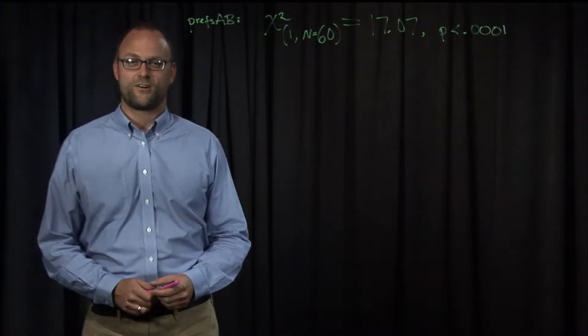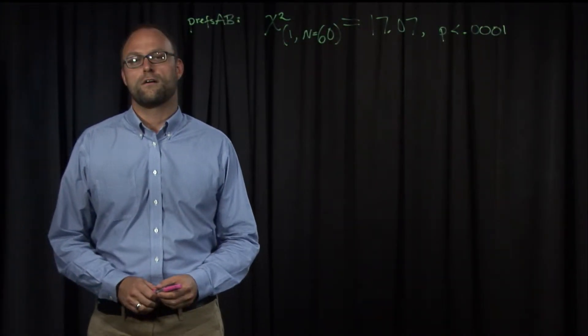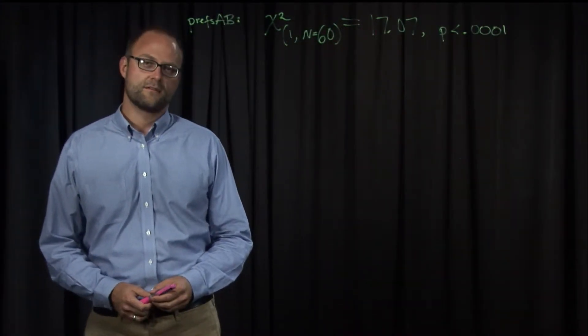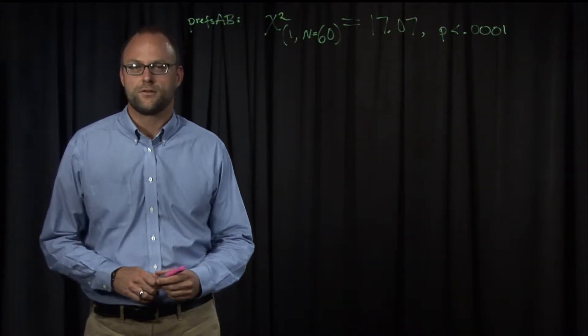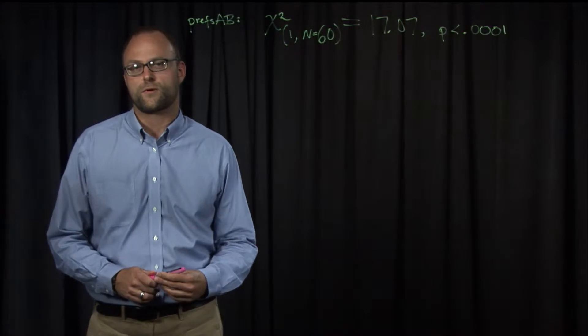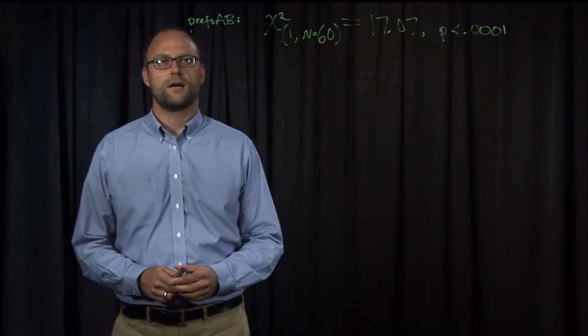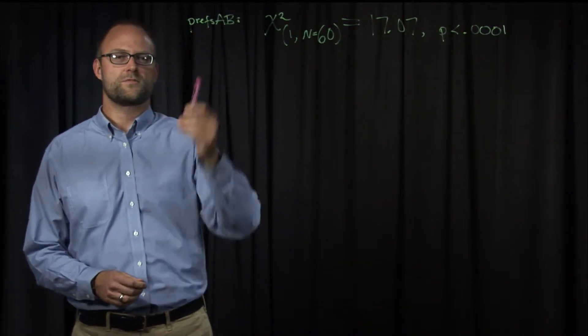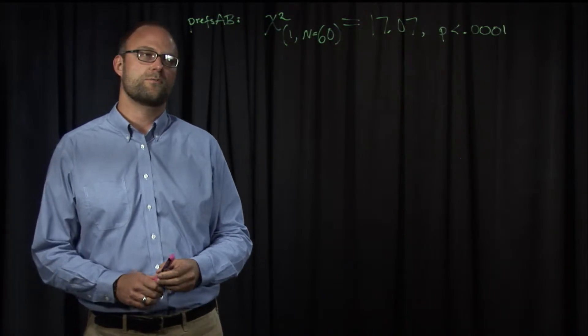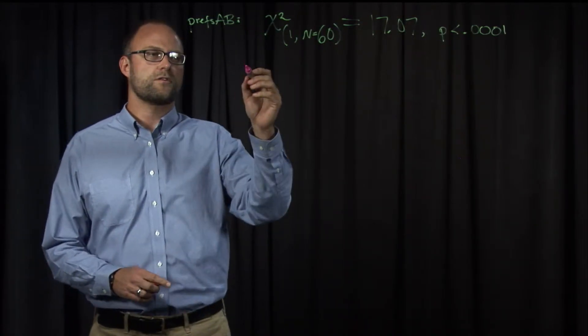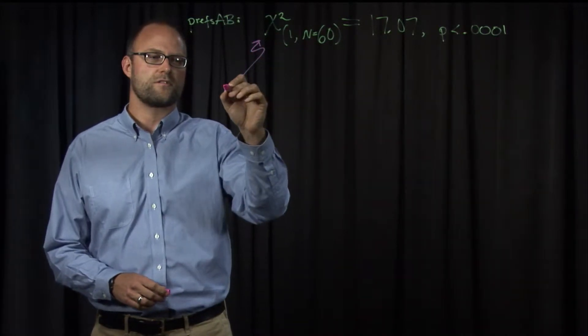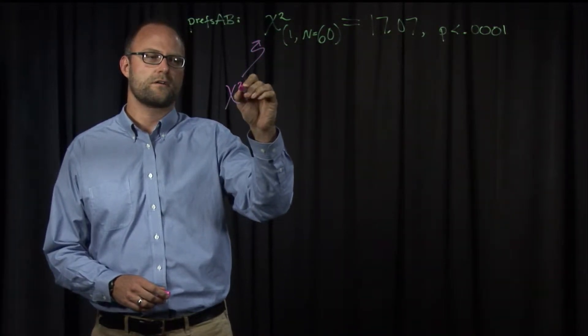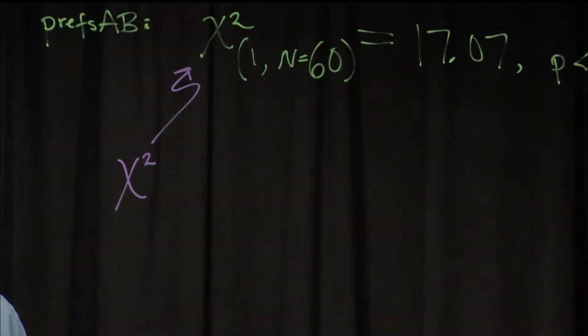So here we have our result for our one sample chi-squared analysis of PREFS AB, and I wanted to show you the notation with which you report a chi-squared result like this. So here I've written our data table just so we remember what the analysis is over, PREFS AB, and I'll circle some parts here. This is the chi-squared symbol, and it's a Greek letter chi, and you can find it on your computer. You'll see it looks similar to an X, but it's different.